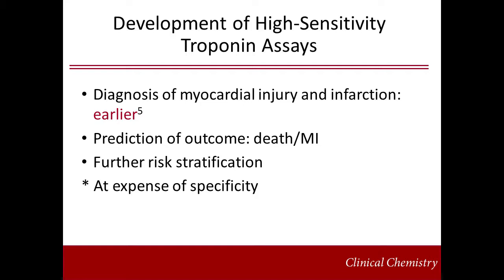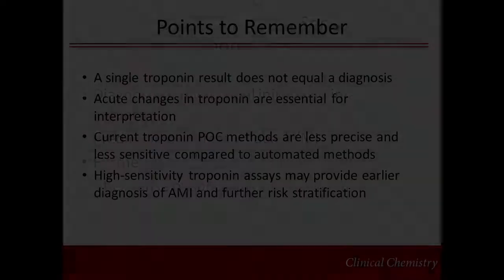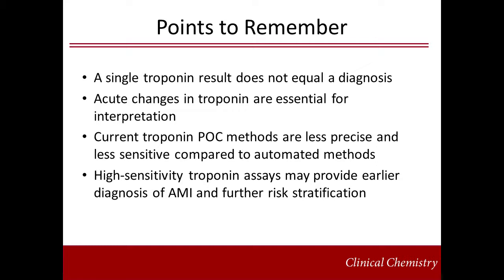So how sensitive does troponin testing really need to be today? Essentially, troponin assays need to diagnose patients with acute myocardial infarction as early as possible, and identify patients who are at risk of premature death from cardiovascular disease. To do this as accurately as possible, the assays do require an acceptable precision within the normal range. There are several key points to remember: a single troponin result does not equal a diagnosis; acute changes in troponin are essential for interpretation and diagnosis of acute myocardial infarction, particularly with use of high-sensitive troponin assays; point-of-care testing for troponin has not achieved the same level of precision or sensitivity as highly automated methods and remains an area for improvement; and finally, the precision of troponin assays will continue to improve, and introduction of high-sensitivity assays may allow for earlier diagnosis of acute myocardial infarction and better risk stratification for our patients.